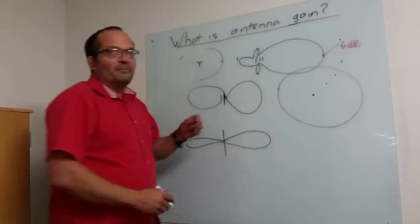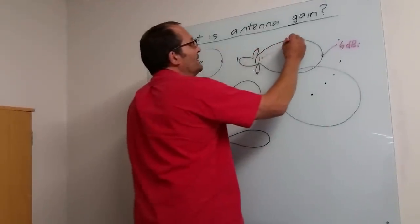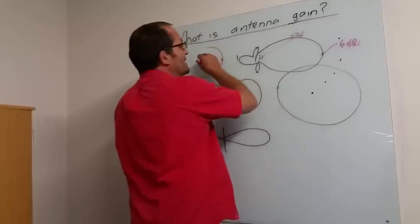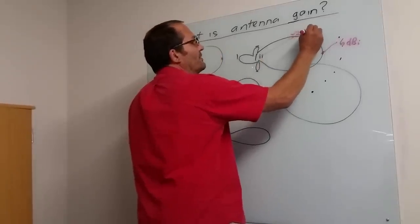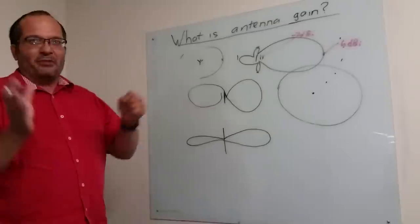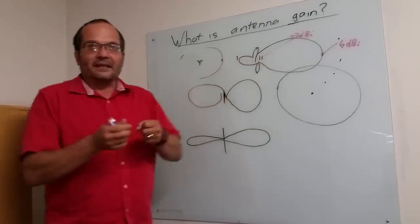This is not like an amplifier, because in other directions like here, this would perhaps be minus two dBi. So it would be less than the isotrope over here. So antennas don't get gain like an amplifier by amplifying things. It actually gets gain by directing it.